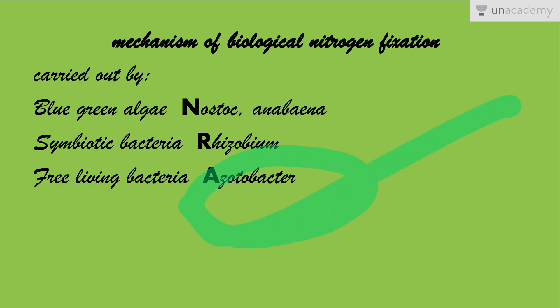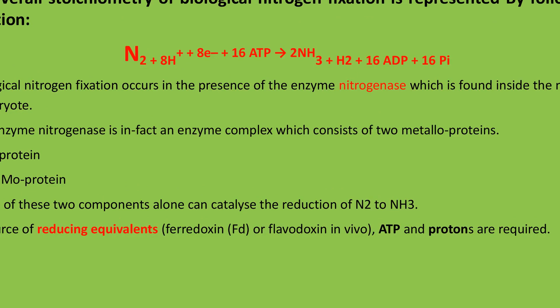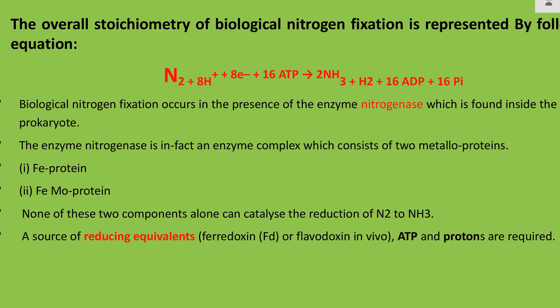Here is the complete reaction representing the whole process of biological nitrogen fixation. As already discussed, nitrogen fixation means the conversion of an unusable form of nitrogen into a usable form. Dinitrogen combines with eight hydrogen ions and eight electrons in the presence of 16 ATP to give ammonia and a hydrogen molecule. The breakdown of 16 ATP results in the formation of 16 ADP and 16 inorganic phosphates.